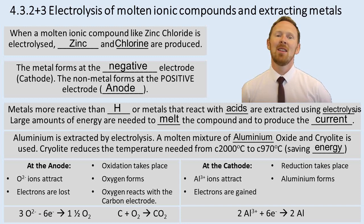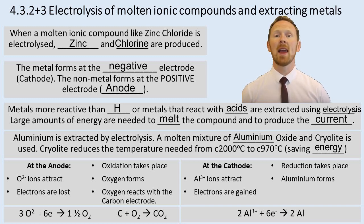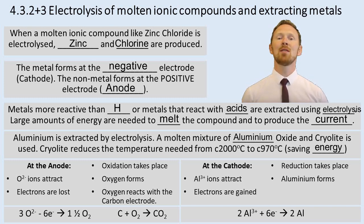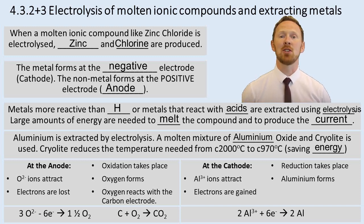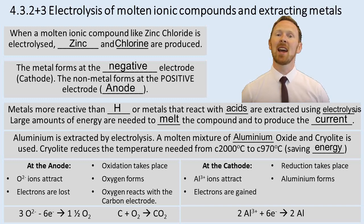During the extraction of aluminium, at the anode, the oxide ions (O2-) are attracted to the anode because they're negatively charged. Electrons are lost — oxidation takes place, as per OIL RIG. Because there are no halide ions in solution, oxygen forms and reacts with the carbon electrode, which is made of graphite. Oxygen reacts with the carbon electrode to produce carbon dioxide, meaning the electrode erodes and needs replacing over time.